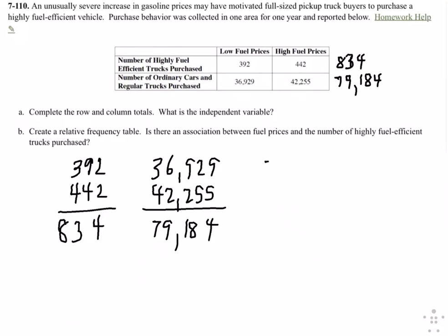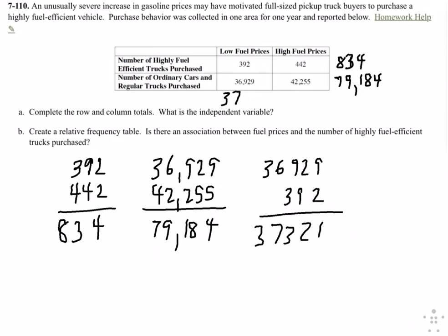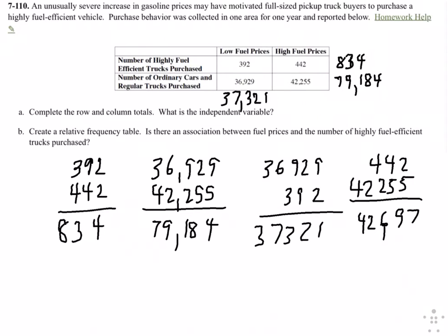Now the columns: I have 36,929 and 392, which gives me 37,321. And then the last column is 442 plus 42,255, which gives us 42,697.